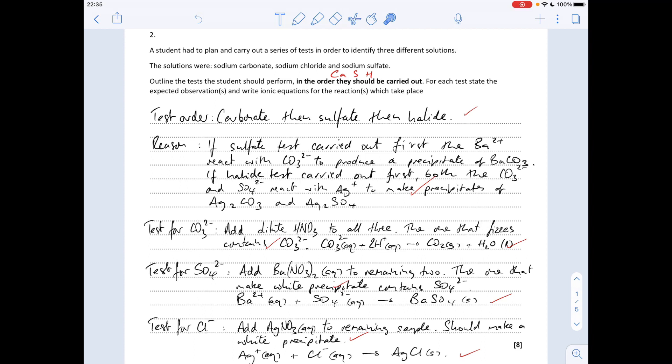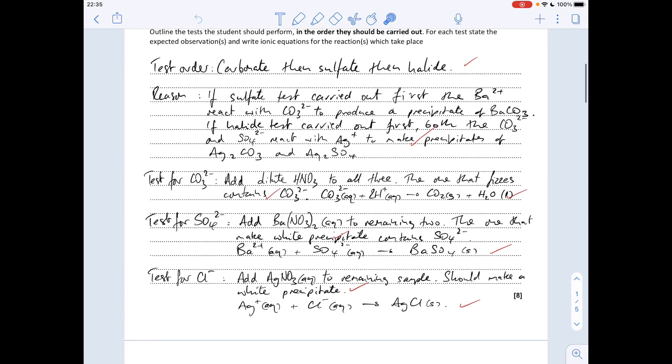Now we're just running through the separate tests and then we're going to give the observation and the ion equation. Obviously the first test you would do would be on all three, so add dilute nitric acid to all three. The one that fizzes, only one should fizz because there's only one carbonate in there, so the one that fizzes is the carbonate and there's the ion equation. Don't forget your state symbols for your ion equations.